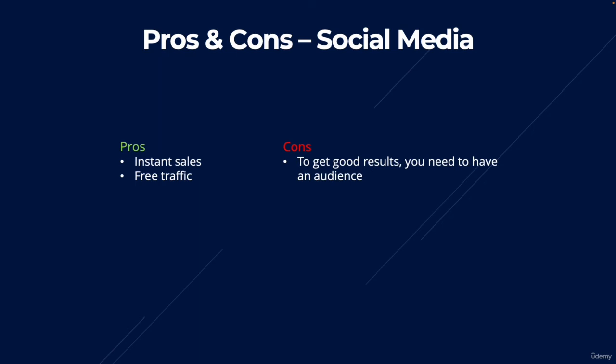The cons of social media: the biggest con is that to get good results, you need an audience. If you only have five followers on Twitter and post an affiliate link, don't expect sales — you need followers in the thousands to generate tangible results. Building a social media following also takes a lot of time. The second con is that you do not own the property. Influencers who tweet something they shouldn't can get temporarily banned, which has a massive negative impact on income. Your tweet and profile can be deleted at any time.